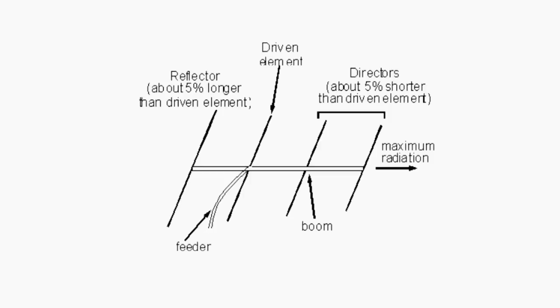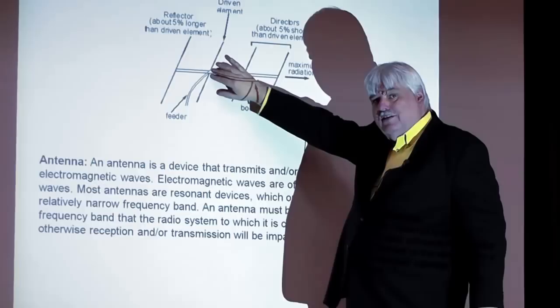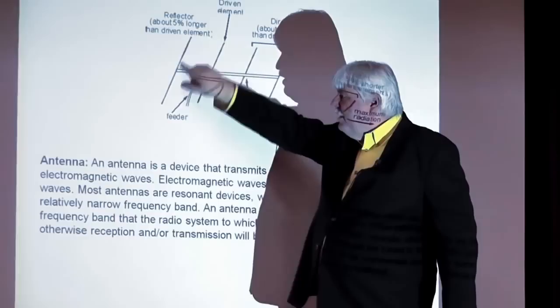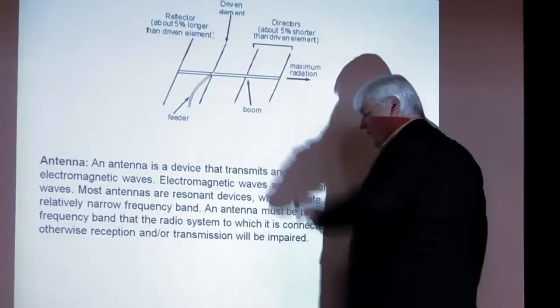This antenna here is a Yagi antenna, used most often in VHF or UHF frequencies. It consists of the feeder or driven element with two wires coming off where your signal is fed down to your television or radio. There's a reflector element in the back so when the signal comes in, it reflects back to the driven element. The directors focus the signal onto the driven element.